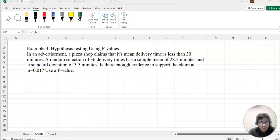In an advertisement, a pizza shop claimed that its mean delivery time is less than 30 minutes. A random selection of 36 delivery times has a sample mean of 28.5 minutes and a standard deviation of 3.5 minutes. Is there enough evidence to support the claim at alpha equals 0.01?